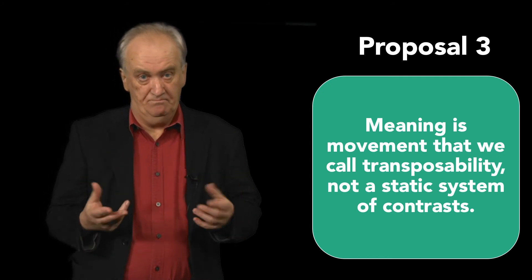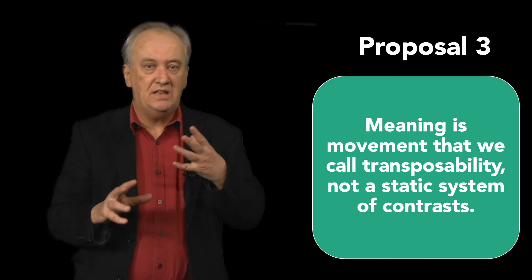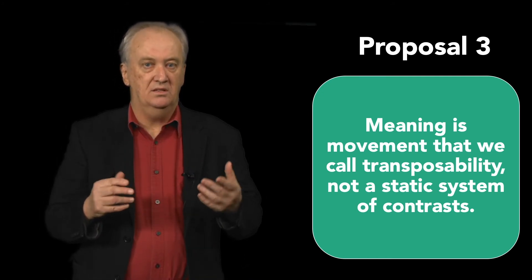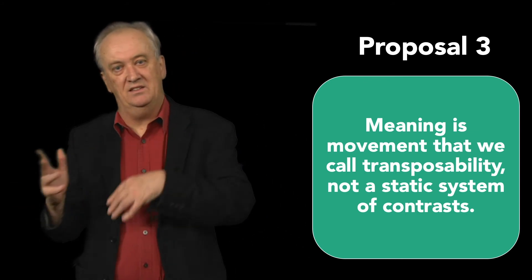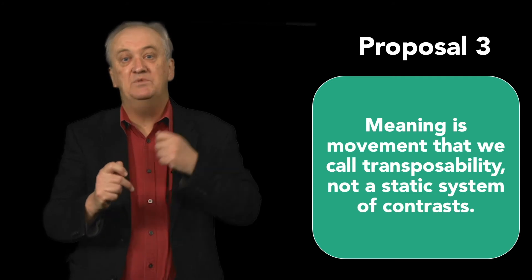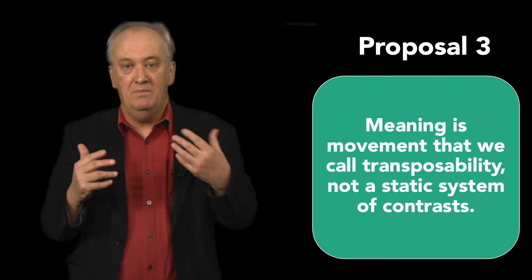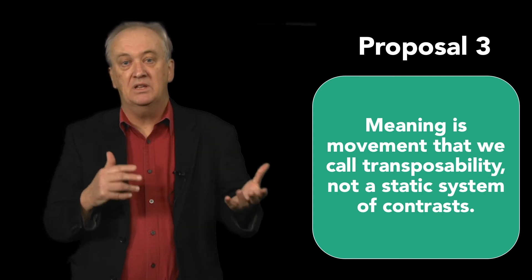And now proposal three. Meanings are not a static system of nameable things, nouns versus verbs in texts, points versus vectors in image. They are systems of movement where nouns and verbs can be made into each other and points can be on vectors.